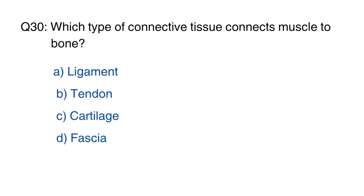Question number 30. Which type of connective tissue connects muscle to bone? The right option is B, tendon.